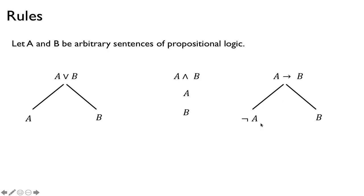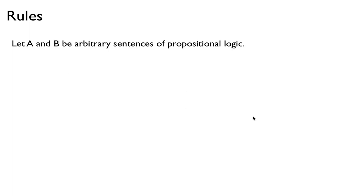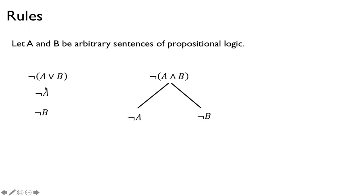The goal is to break down sentences into atomic, simple sentences, and then use that to find counterexamples or prove something. Here are three more rules — the negation rules. Not (a or b): by De Morgan's Law, this becomes not-a and not-b, so it simplifies to not-a and not-b along the same path. Not (a and b) becomes not-a or not-b, so we have branching. And not (a implies b): since a implies b is equivalent to not-a or b, negating gives a and not-b.